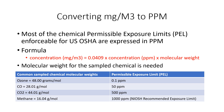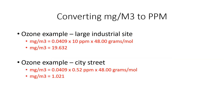Let's do some math. Looking at ozone at a large industrial site — we're trying to figure out what the milligrams per meter cubed is going to be. We take our formula: 0.0409 times 10 ppm, which is what our sample came back with, times 48, which is the molecular weight. That comes back as 19.632 mg/m³.